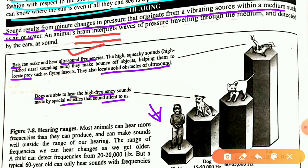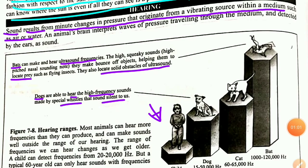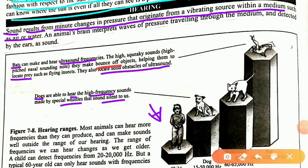Bats produce high squeaky sounds — high pitched, nasal sounding notes. They send these frequencies to any object, and the echo returns. This way bats get to know the location of their prey and can locate them.